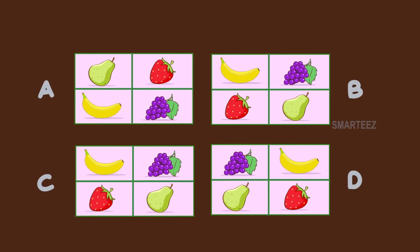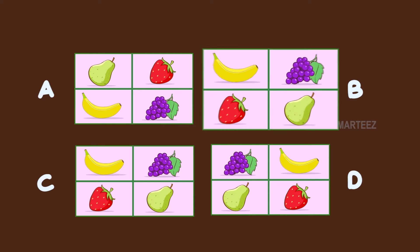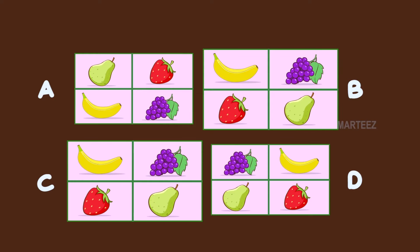Let's look at the two pictures which are the same. You can see the four fruits — banana, grapes, strawberry and pear — in the same order between these two pictures B and C. So these are the only two pictures that are exactly the same. We call them identical.